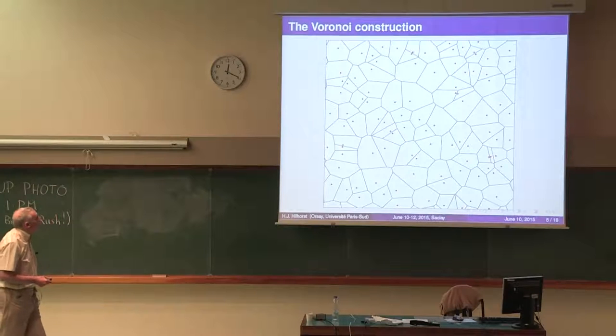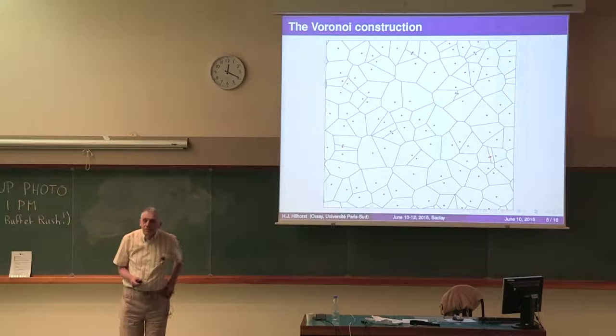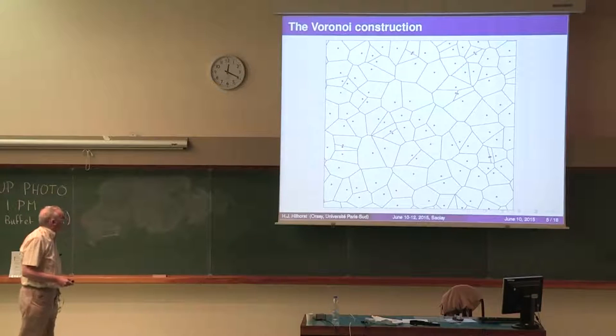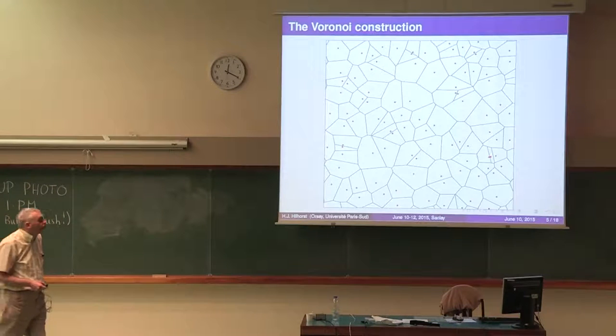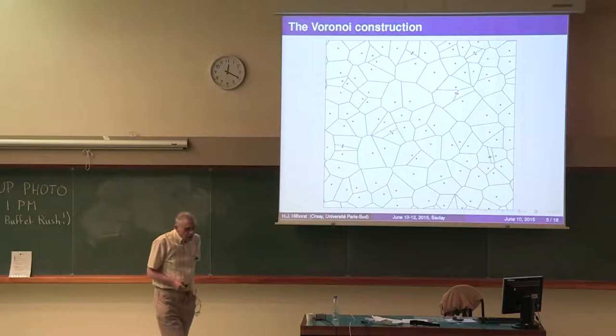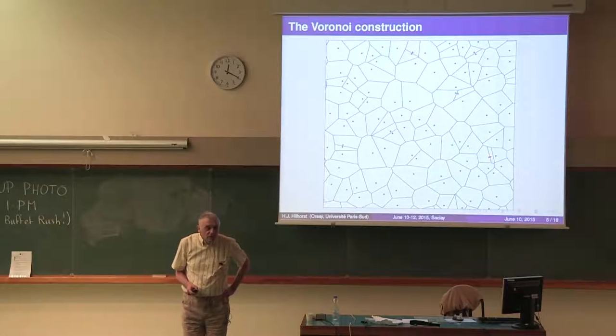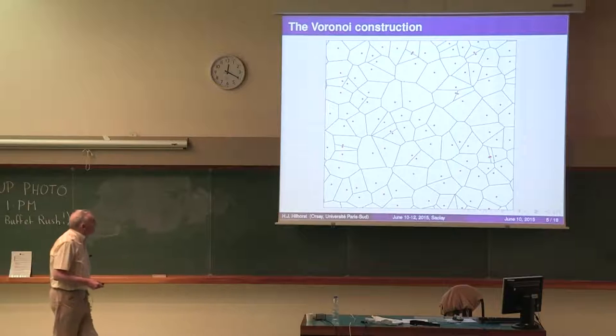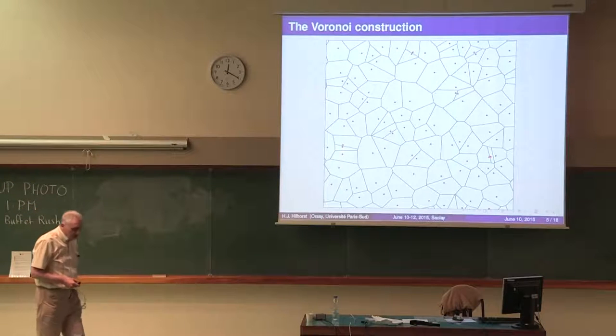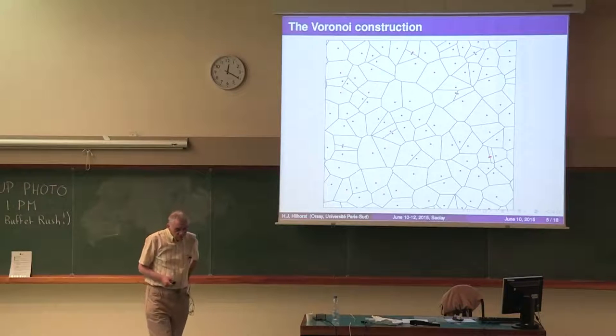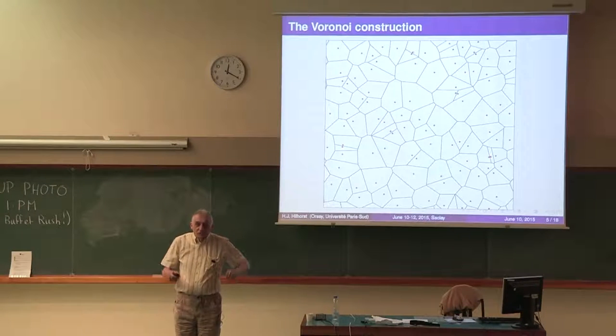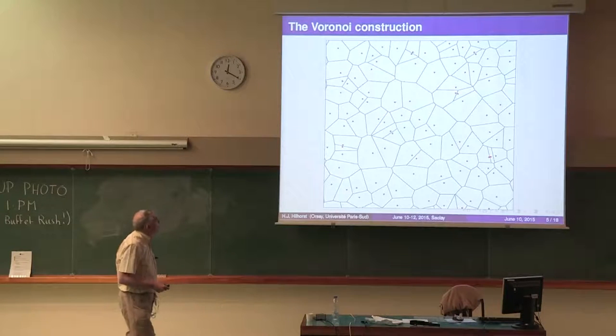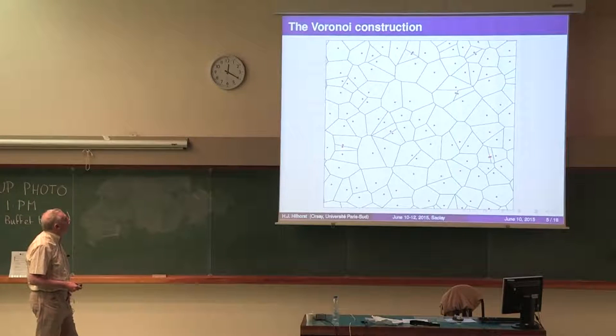If the seeds are located uniformly randomly distributed, we call this a Poisson Voronoi diagram. If the seeds were in a regular lattice, this would be the Dirichlet construction. Voronoi diagrams are used in science and engineering either to model a natural system or as a means of analysis. They are also studied for their own sake by mathematicians in a more rigorous way. In the review literature on this subject, you can find tables of exactly known properties.